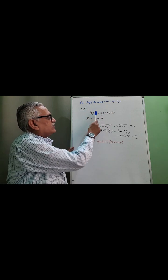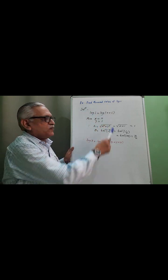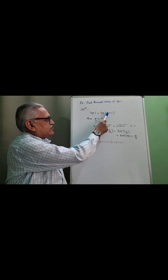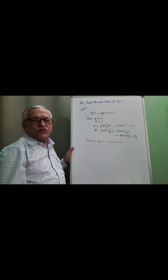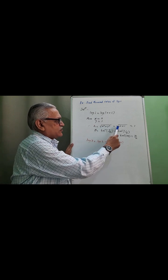General value of log i. We can write log i as log(0 + i). Comparing, we get x is equal to 0, y equal to 1, and therefore r is root of x square plus y square.